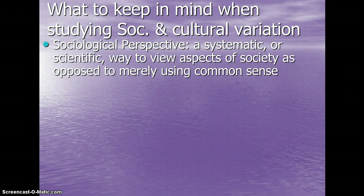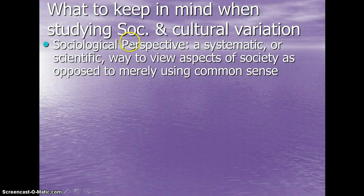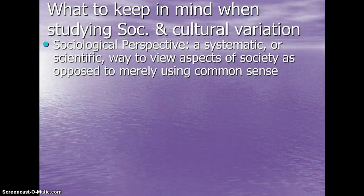What do you need to keep in mind when you are studying social and cultural variation or studying society? Well, the first thing you need to keep in mind is the sociological perspective. That is a systematic or scientific way to view aspects of society, as opposed to merely using common sense. Oftentimes it's human nature just to find a simple answer for something, and even in conversation you will hear people saying it's the way he was raised, or that it's just genetics. You have to look beyond that common sense and look at the science behind what's going on in society.